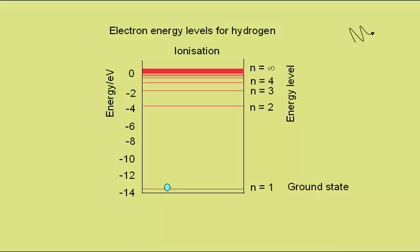It doesn't necessarily have to drop straight to the n equals 1 energy level. For example, it could go down to the n equals 3 energy level, emitting a photon, then down to the n equals 2 energy level, emitting another photon, and finally down to the n equals 1, or ground state, emitting a further photon.